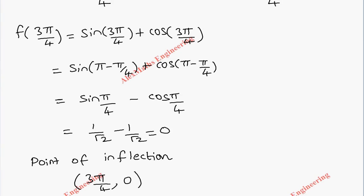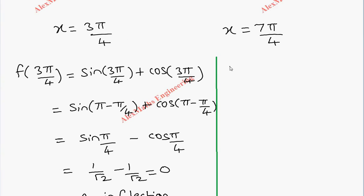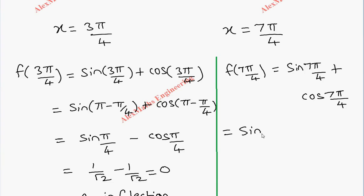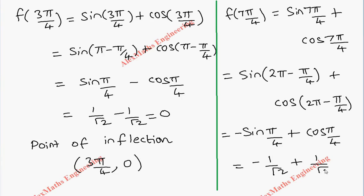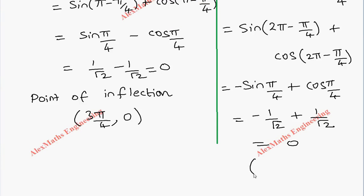For x = 7π/4: f(7π/4) = sin(7π/4) + cos(7π/4). Rewriting 7π/4 as 2π − π/4, in the fourth quadrant sin is negative giving −1/√2, and cos is positive giving +1/√2. These cancel, giving f(7π/4) = 0. So the second inflection point is (7π/4, 0).